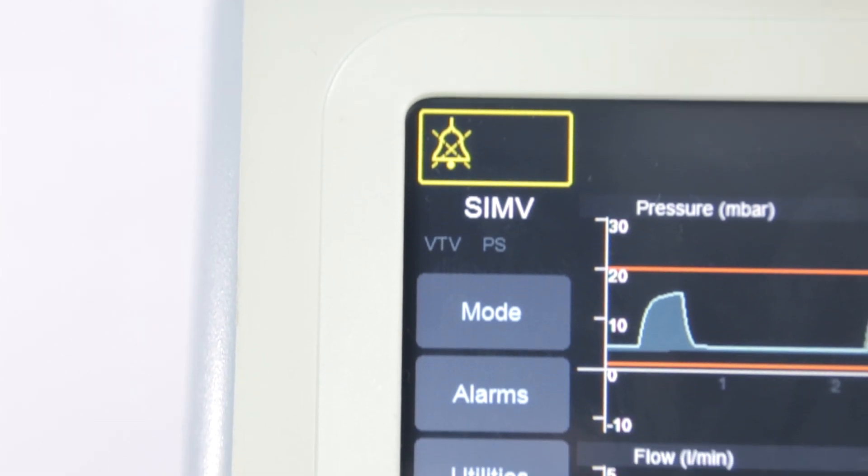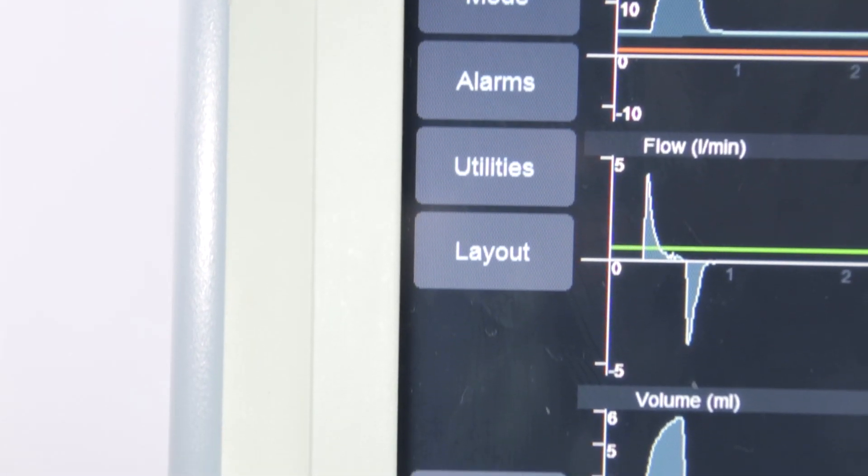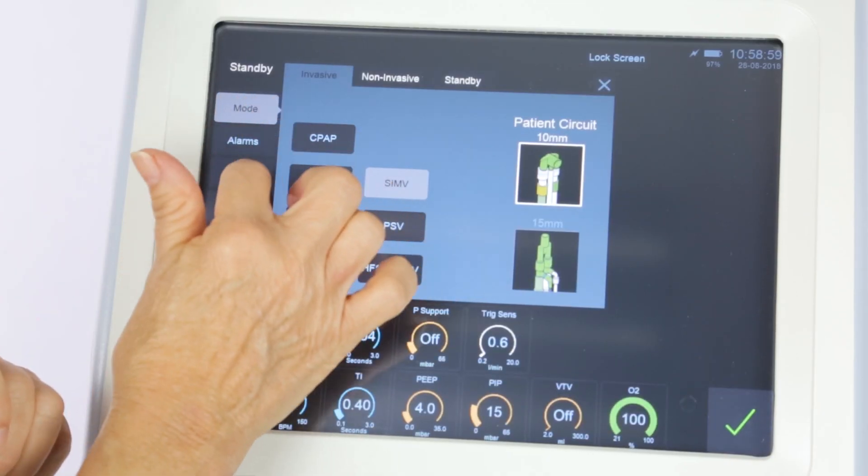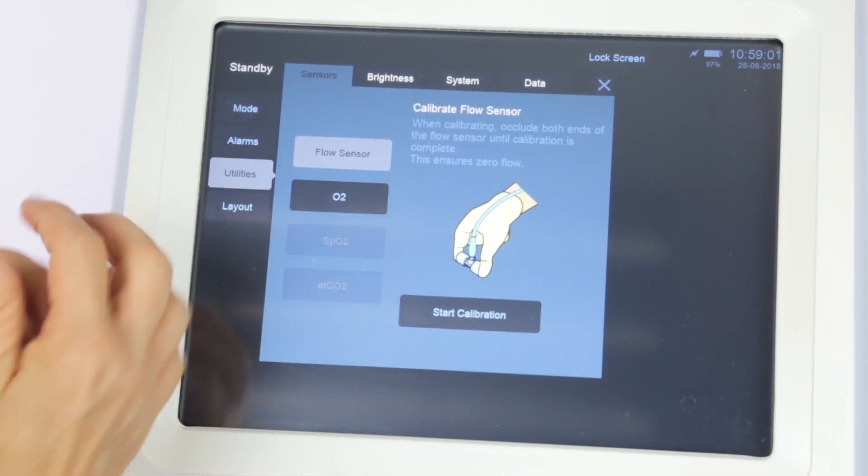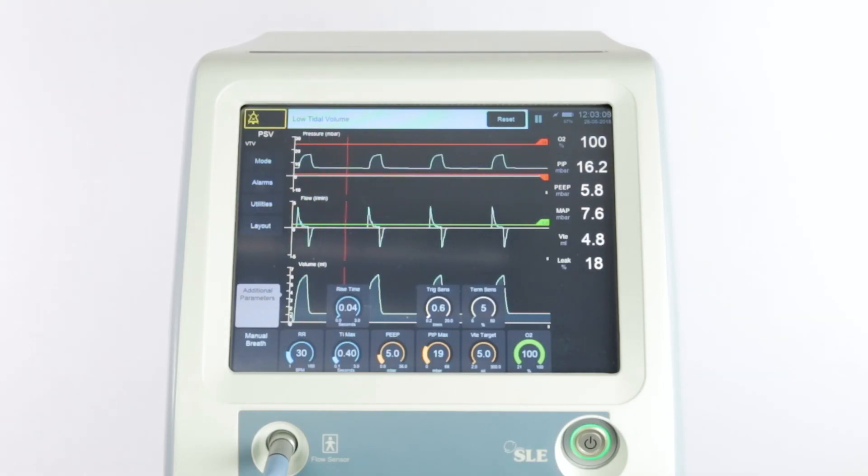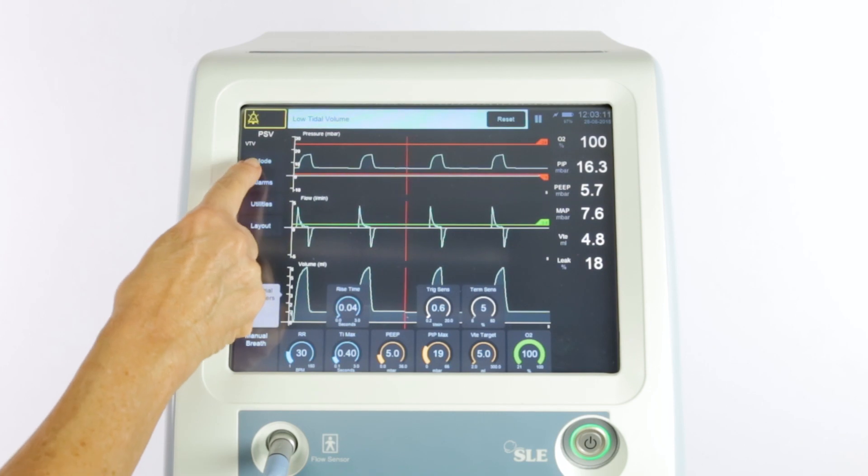Moving to the main controls, there are Mode, Alarms, Utilities and Layout, which give access to most of the main ventilator settings. The first Mode button allows the user to switch between any of the modes on the ventilator.